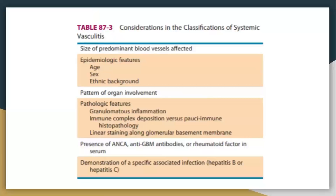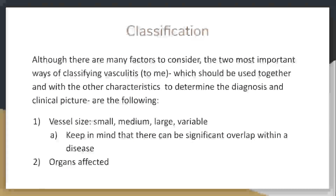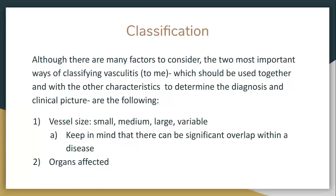Think about what other things the patient has going on. There are two things to me that are the most important. Think about what type of vessel is involved — you can't just say that, for example, an ANCA vasculitis is a small vessel vasculitis because it can overlap.